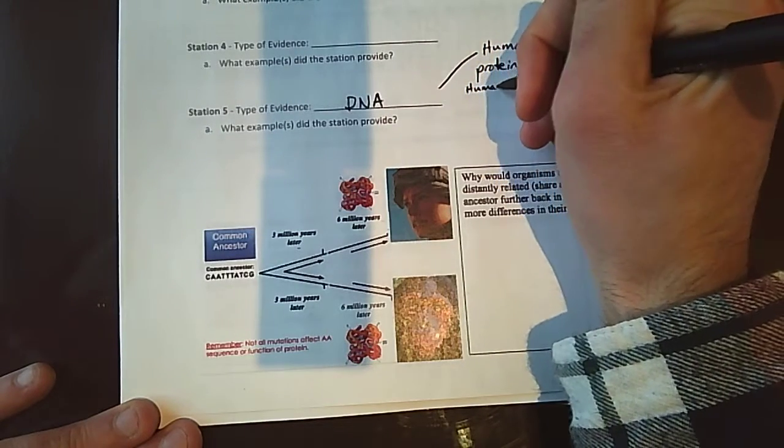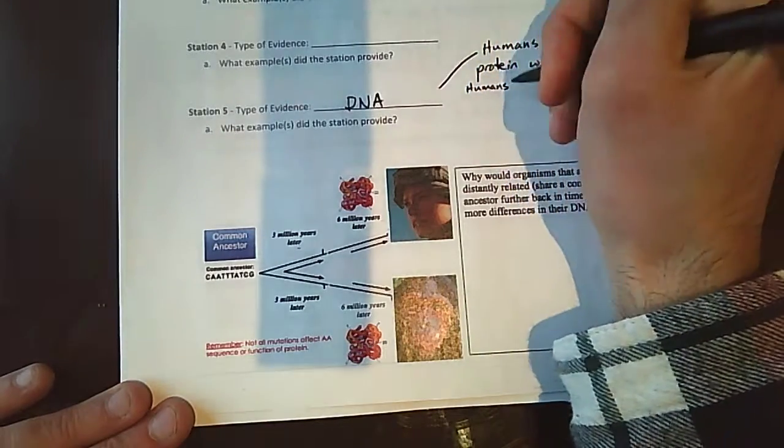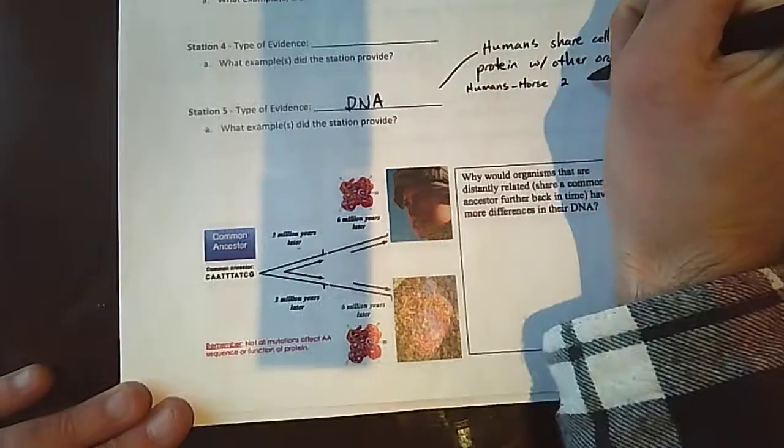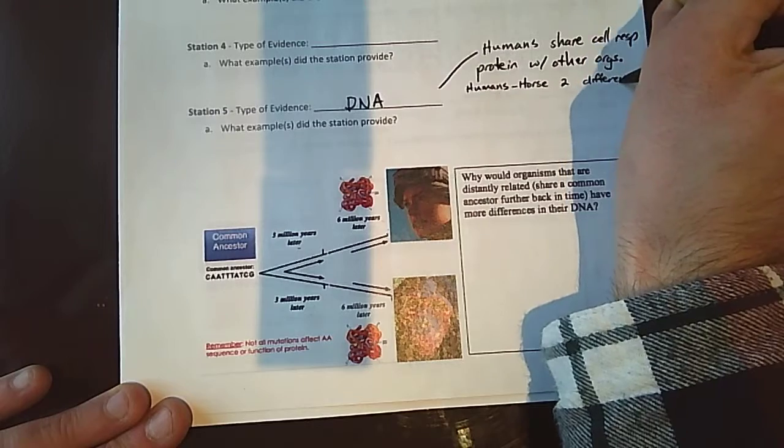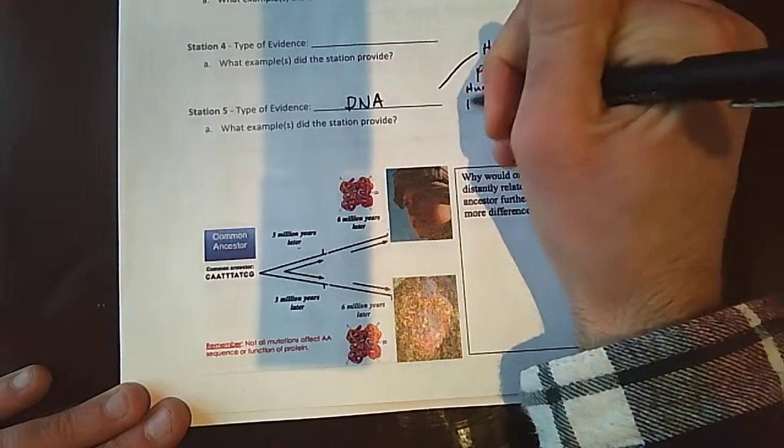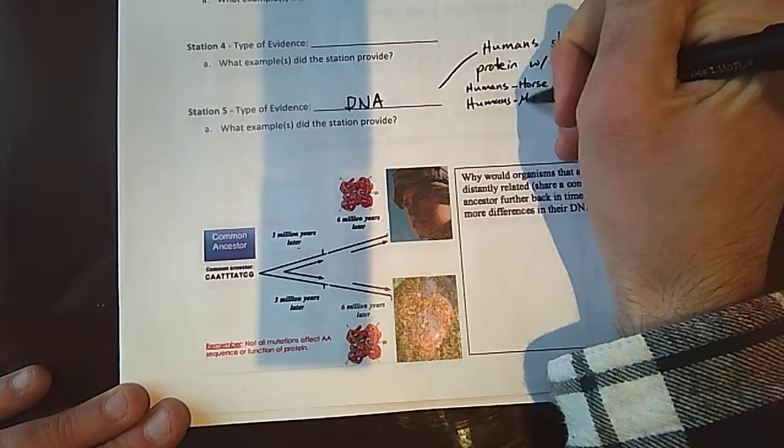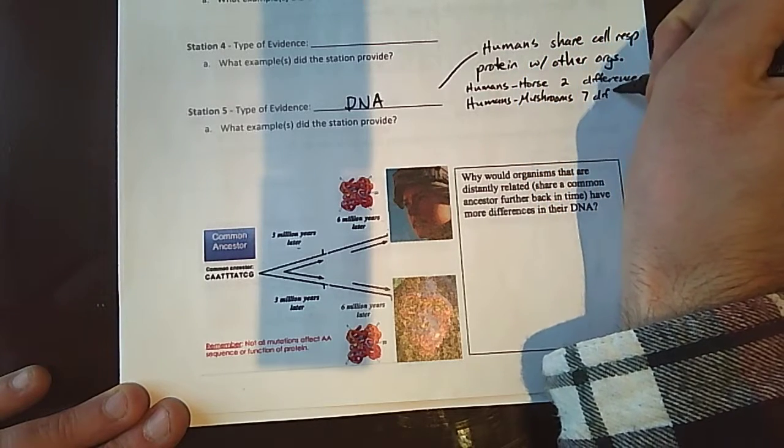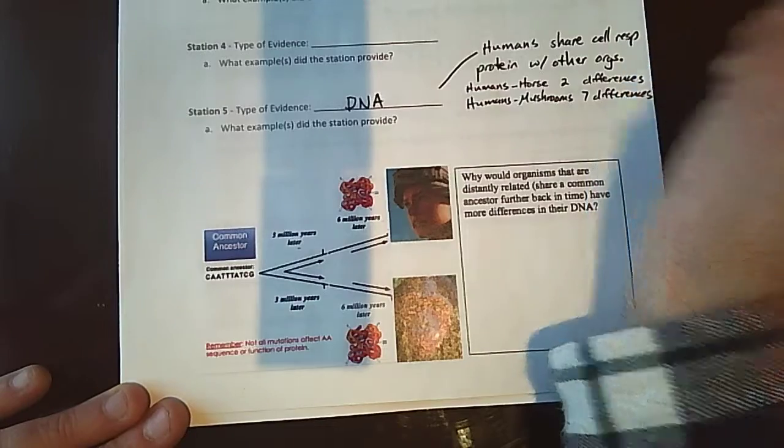An interesting thing is that we found that humans and horses had like two differences, and then we also found that humans and mushrooms had the exact amount, but I think it was like seven differences. But it was much more, right?